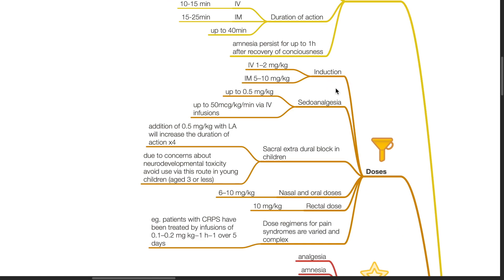Doses. For IV induction, the dose is 1-2 mg per kg. For the IM route, the dose is 5-10 mg per kg. For pseudo analgesia, up to 0.5 mg per kg can be administered. For IV infusions, up to 50 mg per kg per minute can be administered.